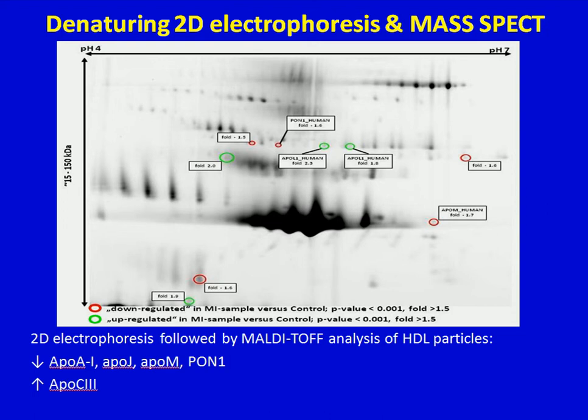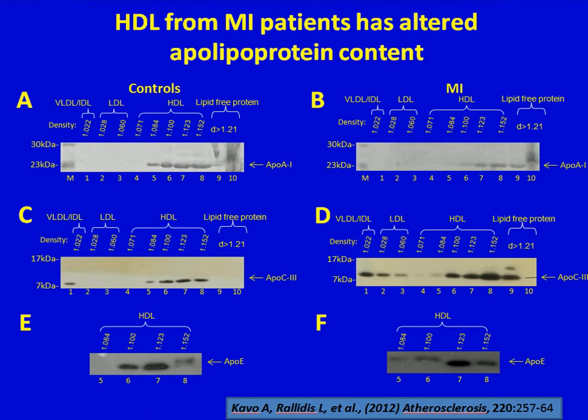Following multivariate analysis, we found that in the patient group there was a significant reduction in ApoA1, ApoJ, ApoM, and paraoxonase, whereas there was a very important increase in ApoC3. These data were further confirmed by Western blot analysis, showing that in the patient group we had a significant reduction in ApoA1-containing HDL and a quite measurable increase in ApoC3 in HDL, whereas ApoA1 did not seem to change in amount but rather in its distribution, suggesting that different subpopulations of HDL exist between the control group and the patient group.